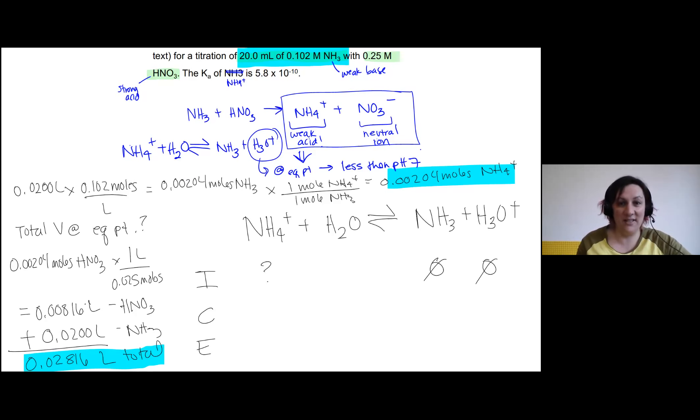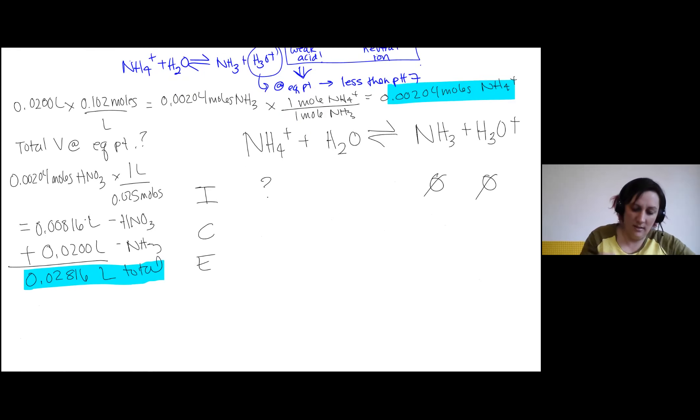So we combine that number with the number of moles of NH4+ that we have. And that's going to give us our concentration of NH4+. So that concentration of NH4+ initially will be equal to 0.00204 moles divided by 0.02816 liters, which is going to give us a value of 0.0725 molar. Great.